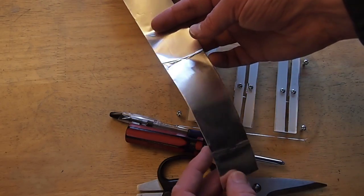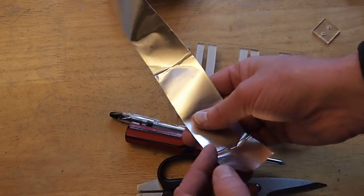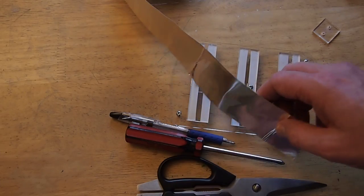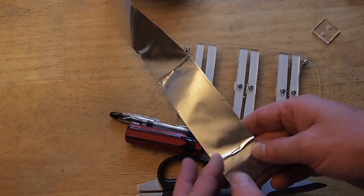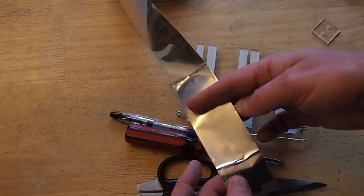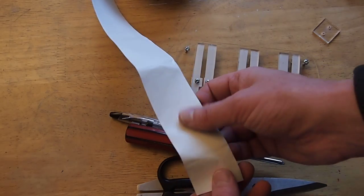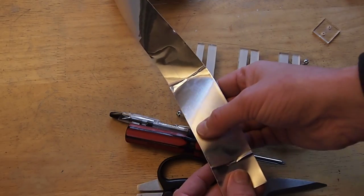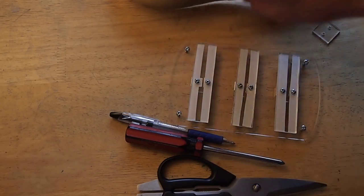Instead of copper tape, this is aluminum tape that you get in the HVAC section of a hardware store. This is conductive tape that has adhesive on the back and this part here is aluminum tape. It works out pretty nice.